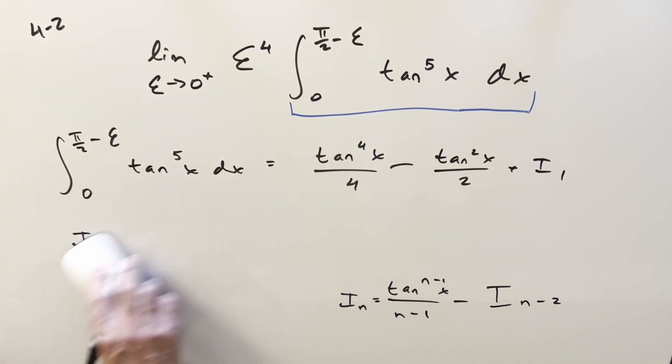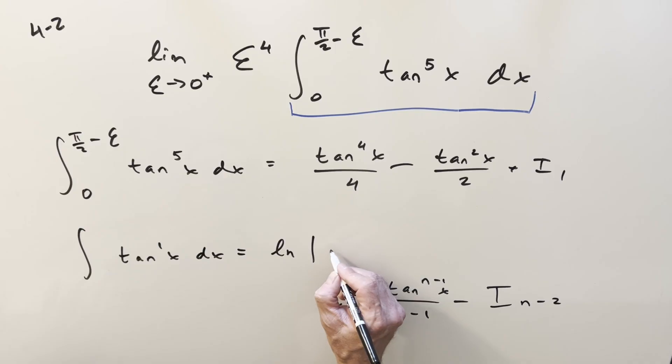This is going to be tan squared x over 2 plus i sub 1. But i sub 1, let's just do it up as the last term is always a little weird. i sub 1 is just, we're just talking about the integral of tan to x.